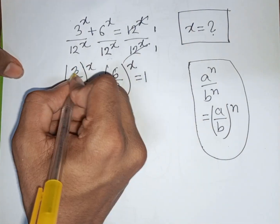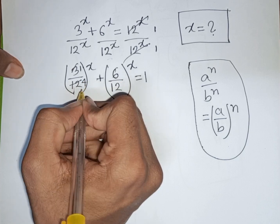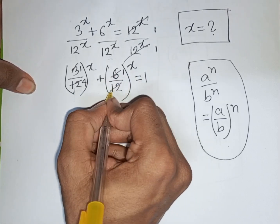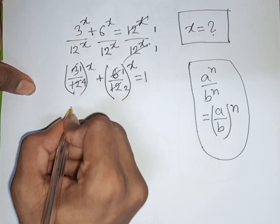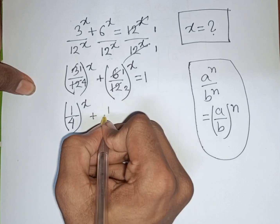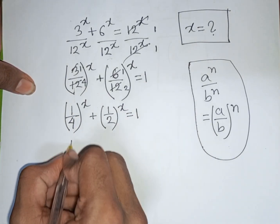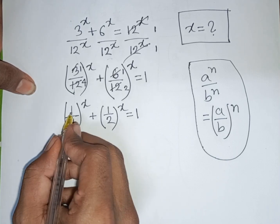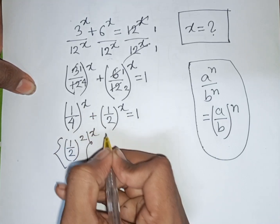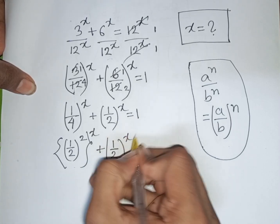Now 3 divided by 12 gives 1/4, and 6 divided by 12 gives 1/2. So our equation becomes (1/4)^x + (1/2)^x = 1.